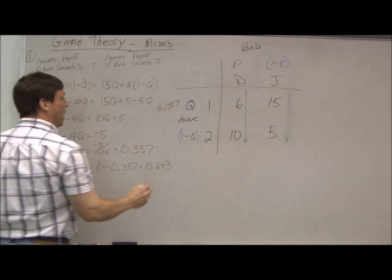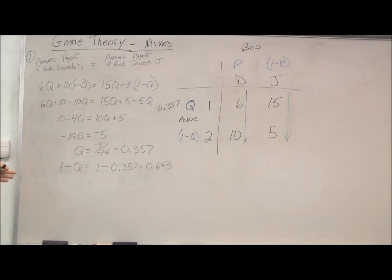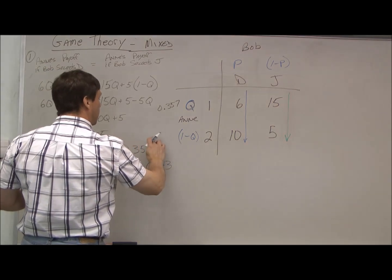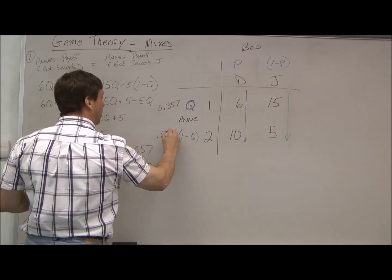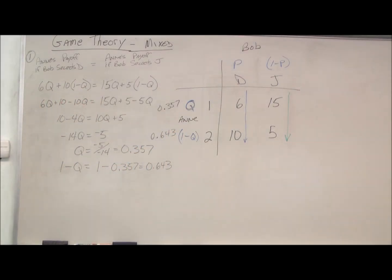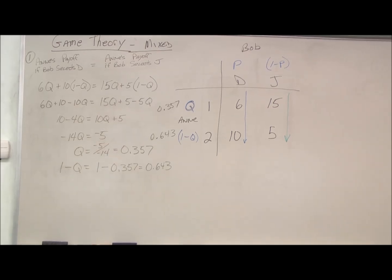So Annie should play option one 35.7% of the time and she should do option two 64.7% of the time. So those are my two probabilities, or percentage of times Annie should play each of her strategic options.